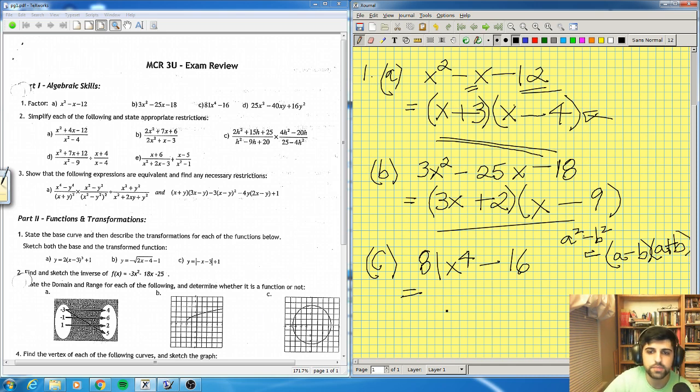So all you have to do is factor this. You have to put it in terms of squares. 81 is 9 squared, and x to the 4 is x squared squared. So I can rewrite that first term as 9x squared squared. And then, 16 is 4 squared. So my factoring is going to be rewritten as 9x squared minus 4 and 9x squared plus 4.